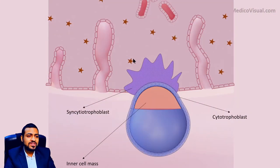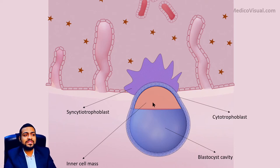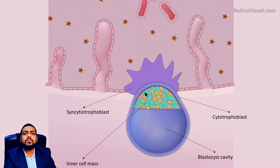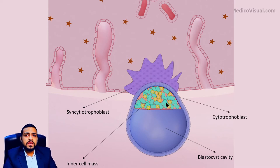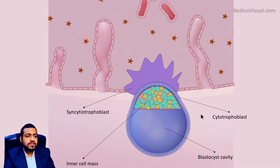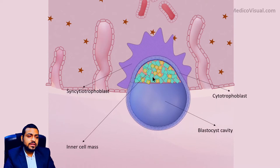Now let's focus our attention towards the inner cell mass or embryo proper. Initially this inner cell mass is basically an amalgam — a mixture of two types of cells that are not arranged in a particular fashion. But as the second week starts, and even sometime before at the end of the first week, these cells will rearrange themselves within the inner cell mass.